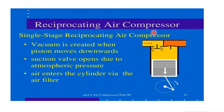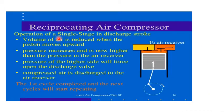In the single-stage reciprocating air compressor, a vacuum is created when the piston moves downward. The suction valve opens due to atmospheric pressure and air enters the cylinder via an air filter. In the discharge stroke, the volume of air is reduced when the piston moves upward, pressure increases and becomes higher than the pressure in the air receiver. This forces open the discharge valve and compressed air is discharged to the air receiver.